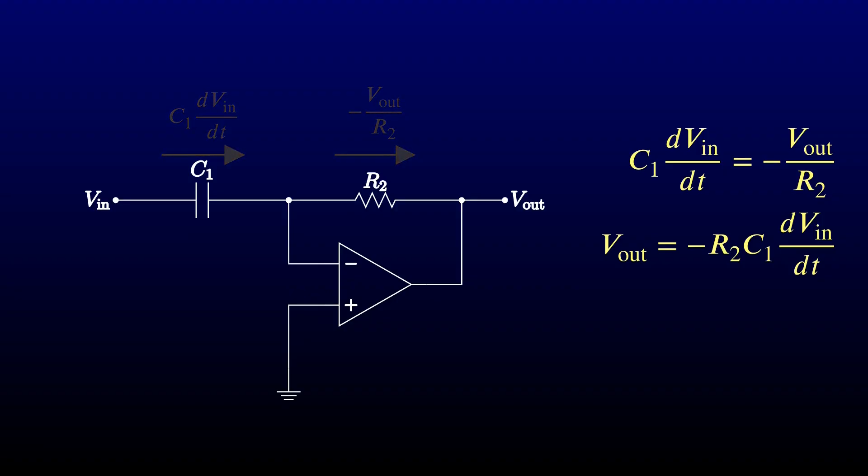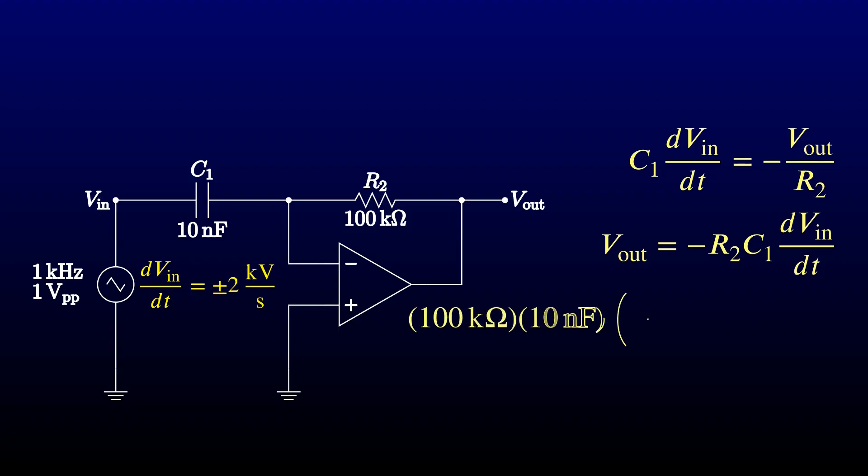So let's design one here. I'll choose nice round values for the resistor and capacitor. And I'll feed the circuit with a 1 kHz, 1 volt triangle wave from my AWG. That gives a rate of change of plus or minus 2 kilovolts per second. 100k times 10 nanofarads times plus or minus 2 kilovolts per second is plus or minus 2 volts.